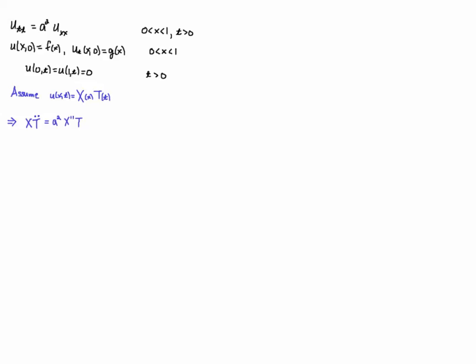And then we separate variables and we get this separation constant minus mu squared just as we did before in the heat equation. And this leads to two ODEs, one in time and one in space. Now I switched from double dot notation to double prime notation. You'll see that in a lot of textbooks, so I'm just sticking with that convention.